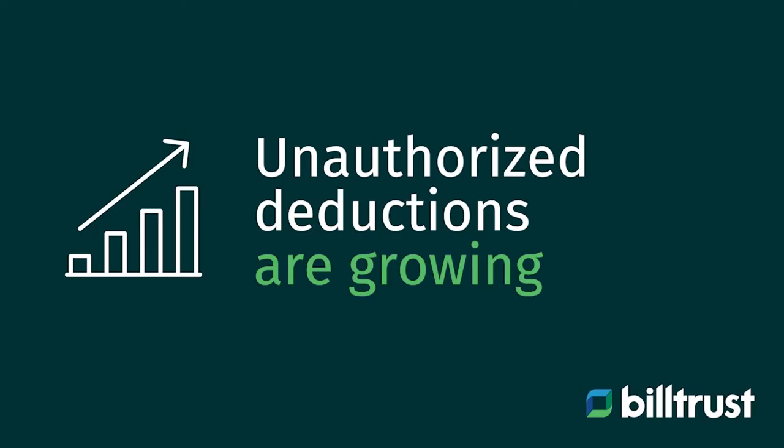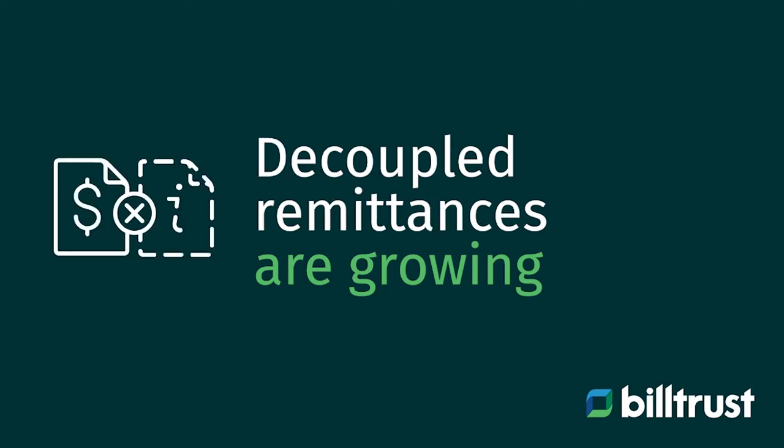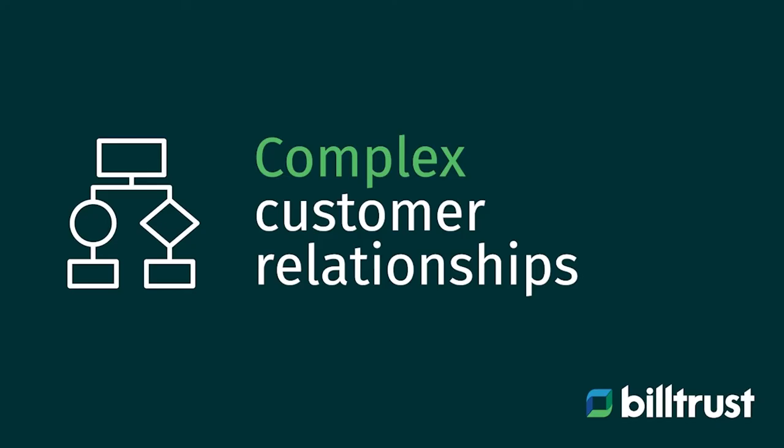Unauthorized deductions are growing — deductions that your team can't necessarily plan for, something like damaged goods. Decoupled remits are growing with electronic payments, so we're seeing more ACH and wire payments coming into customers' accounts that don't reference invoice or addenda information to help teams apply them quickly. And then there are also complex customer relationships, such as parent-child relationships, that can add complexity to the cash application process.